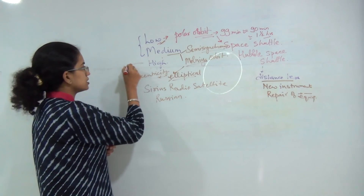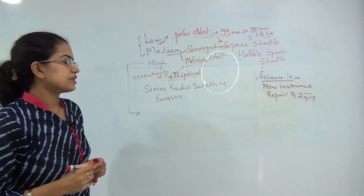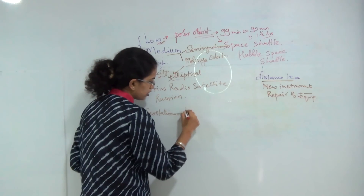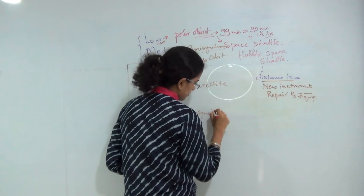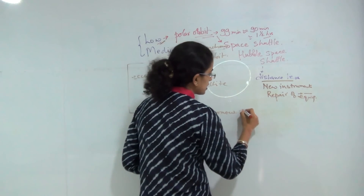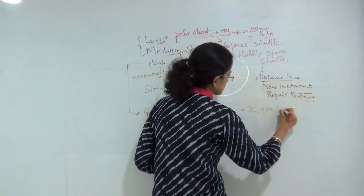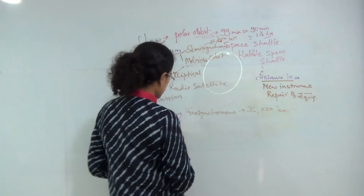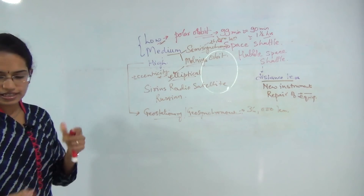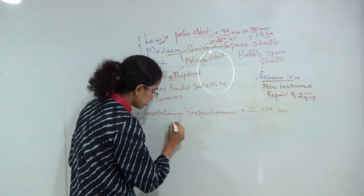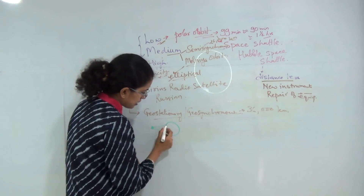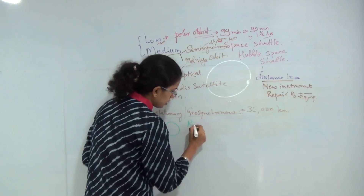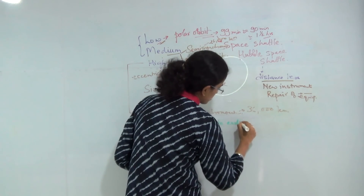High orbit typically refers to geostationary or geosynchronous orbits, located at a height of around 36,000 kilometres, in contrast to semisynchronous which is around 26,000 kilometres. At this height, the forces cancel out and the satellite remains stationary with respect to the earth, transmitting information about the same section of the earth at all times — they remain constant relative to earth.